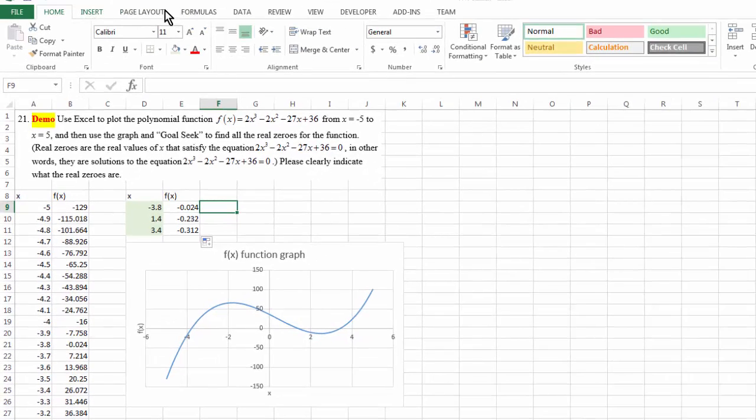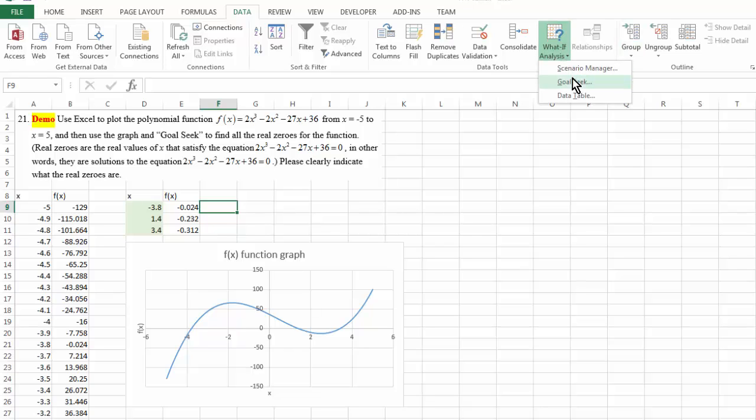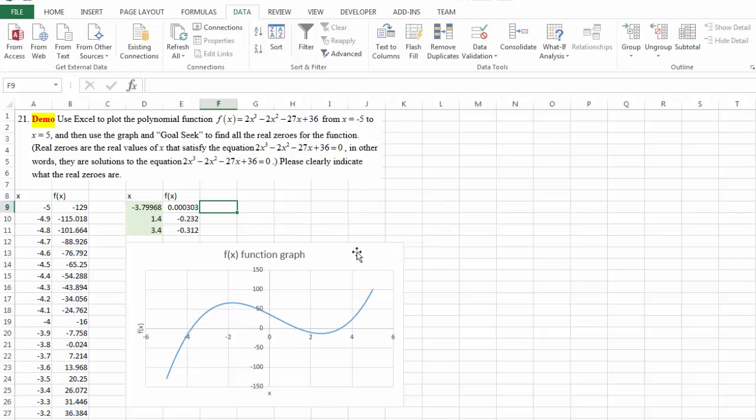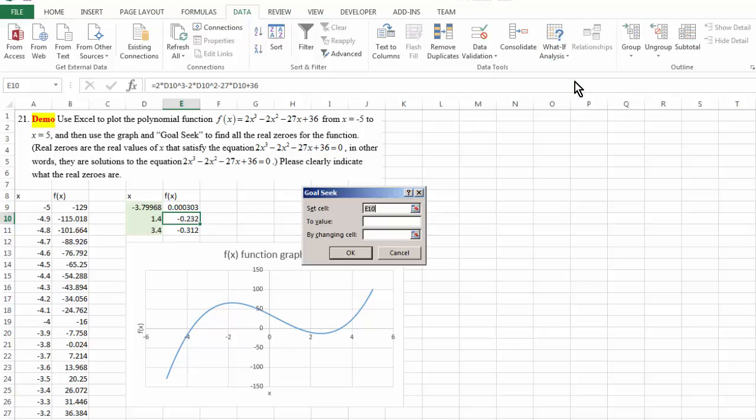Therefore I'm going to use what-if analysis Goal Seek. You can use the solver as well, but for this we actually don't need the solver. So we want to set this first function value to be zero by changing the corresponding x value. And then we need to manually do this for the other two.